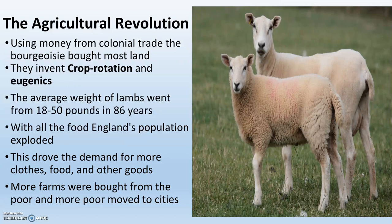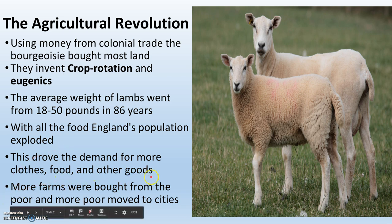Both of these things together create lots and lots of food for England. For example, the average weight of lambs went from 18 to 50 pounds in 86 years — so it tripled — which is amazing. England's population is exploding because of all this food, and with big populations people need stuff. Lots of people need lots of stuff, so this drives the demand for clothes, food, and other goods.